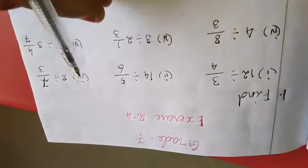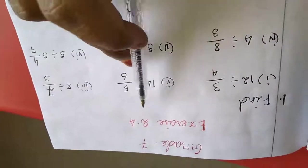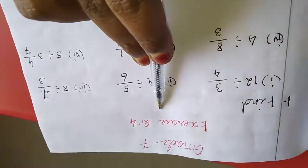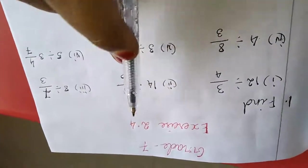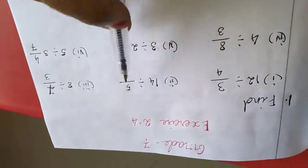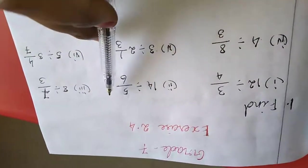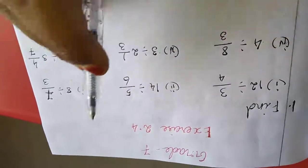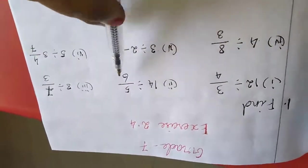Hi dears, in last class we completed up to exercise 2.3. Now we are moving to 2.4. In this exercise we have 4 sums. For the first 3 sums, I will do the model sums only; the balance is homework for you. Just listen carefully.